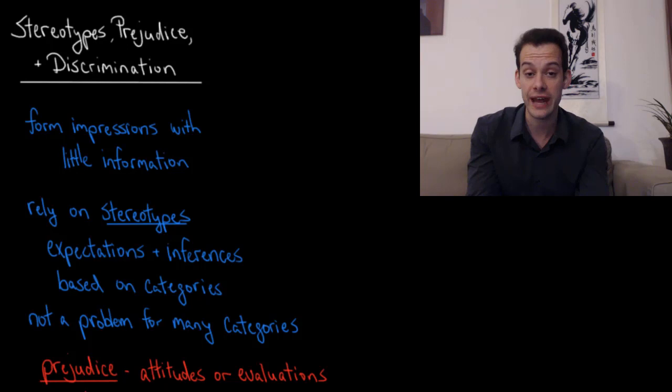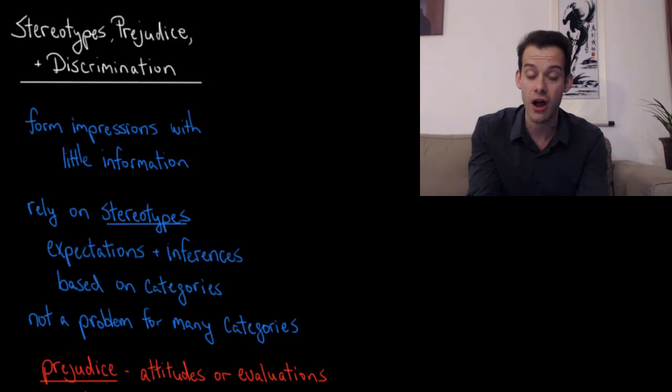In the previous video we looked at impression formation and we saw with thin slices theory the idea that we can form impressions of people very rapidly, on the basis of very little information. This is because we use heuristics — we take shortcuts, we make assumptions, we fill in the gaps in our knowledge automatically. And this means that we rely on stereotypes.